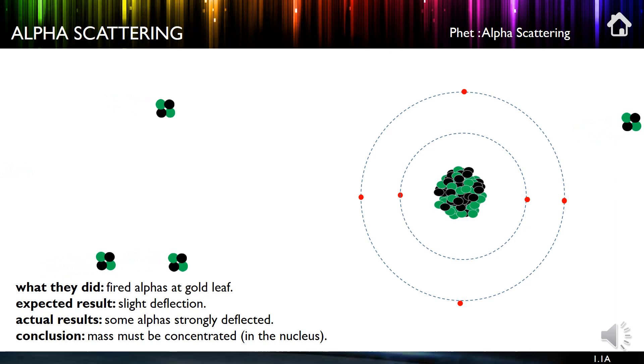which they kind of expected, but about one in six thousand bounced back. And we can see that here bouncing back, there it goes. And the only way of explaining that was this idea of a nucleus. They didn't have this concept before, but they said the only way of explaining it is it must be concentrated, and all that repulsive force has to act on one alpha at a time.